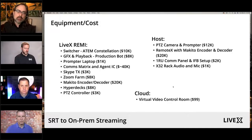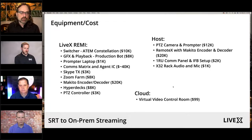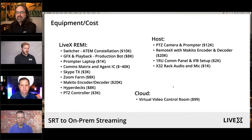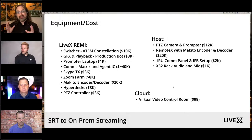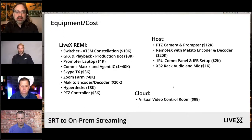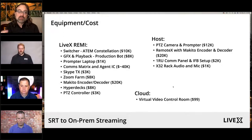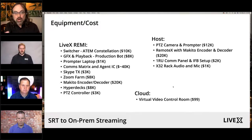As far as an SRT or RTMP encoder, you probably have Elemental as the top still, and then Makito is right up there as what the military and broadcasters tend to use. We have a product created for the Democratic National Convention called Virtual Video Control Room. What we used for Tamron for the director multi-view was an early beta of that — we were able to get the multi-view in SRT, and the director could look at it in near real time.